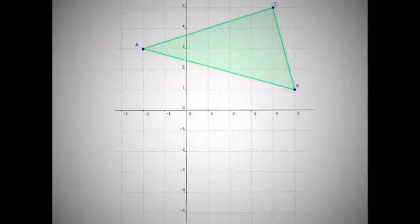Reflecting over the x-axis requires us to multiply our y-coordinate this time by negative 1. So A here is at negative 2, 3. So when we multiply the y-coordinate by negative 1, our new coordinate becomes negative 2, negative 3.